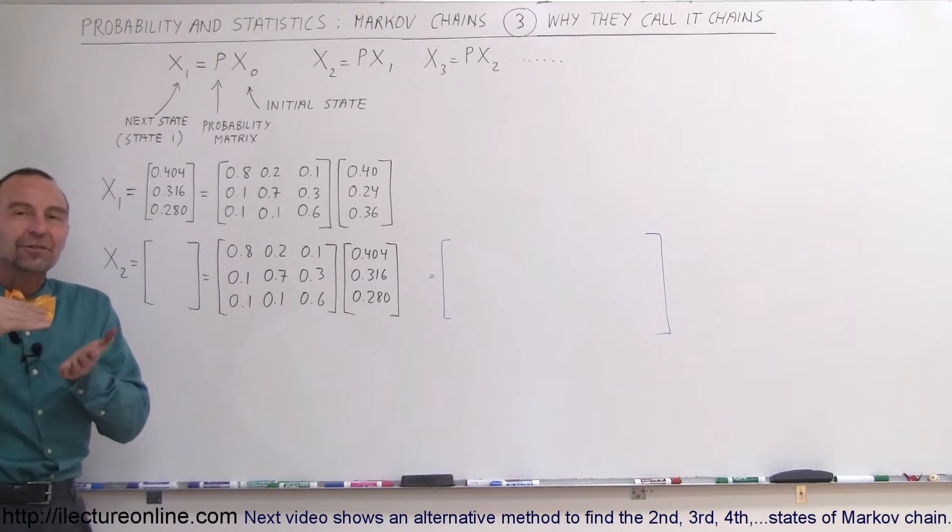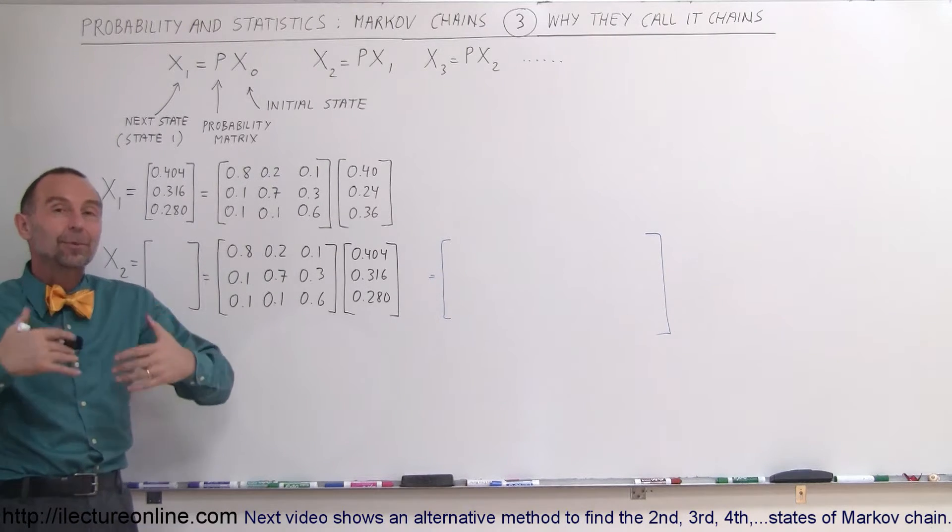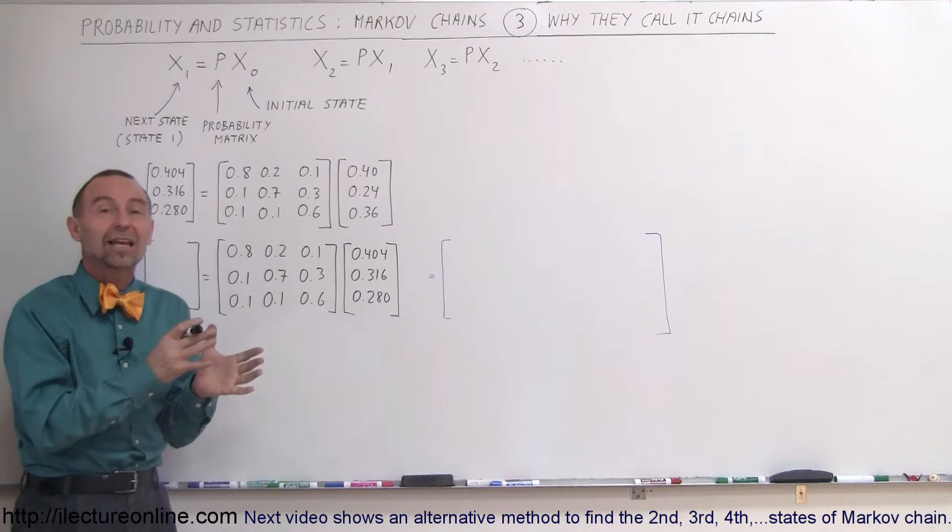It's because there's usually a chain of events associated with it. In the previous example we showed you a simple transaction: the current state, a probability matrix, and the next state.